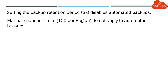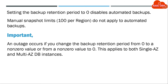Manual snapshot limits — 100 per region — do not apply to automated backups. Important: An outage occurs if you change the backup retention period from 0 to a non-zero value, or from a non-zero value to 0. This applies to both Single-AZ and Multi-AZ DB instances.